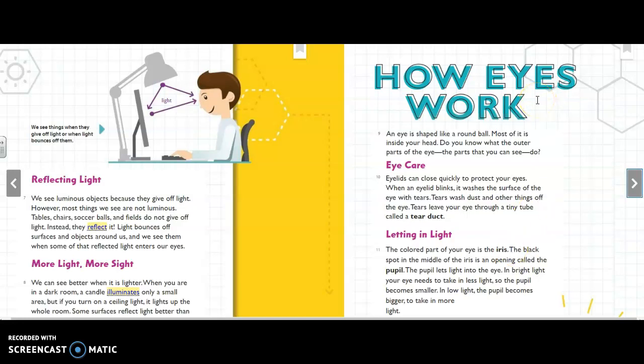How eyes work. An eye is shaped like a round ball. Most of it is inside your head. Do you know what the outer parts of the eye, the parts that you can see, do? Eyelids can close quickly to protect your eyes. When an eyelid blinks, it washes the surface of the eye with tears. Tears wash dust and other things off the eye. Tears leave your eye through a tiny tube called a tear duct. Look how that's bold.